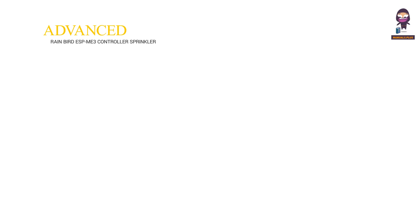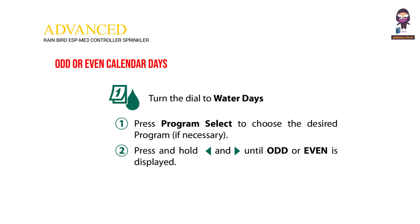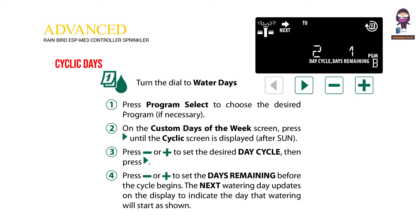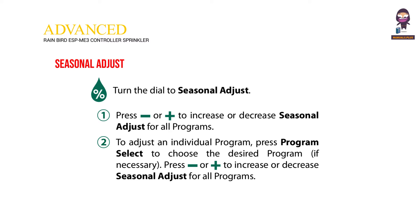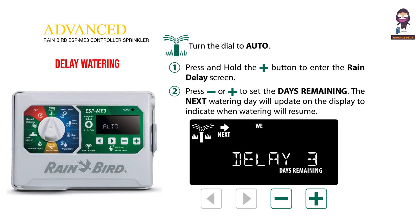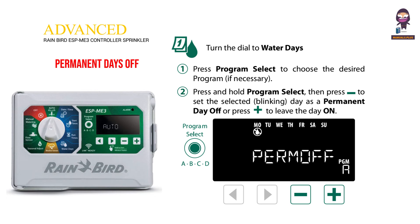Advanced programming. Odd or even calendar days. Cyclic days. Seasonal adjust. Delay watering. Permanent days off.